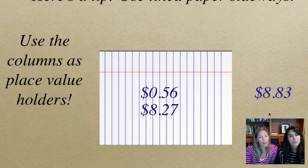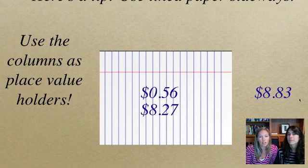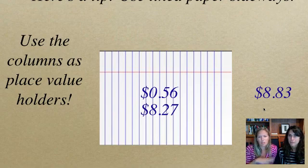So hopefully, after you added those all up, you got $8.83. So if you did not, maybe look back at your work and see, did you forget to add in one of your new groups? Or what did you do? Where did we mess up? But that was what we should have gotten.